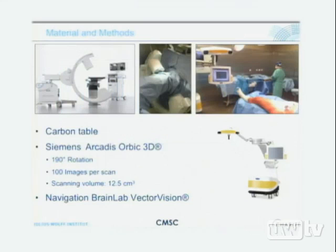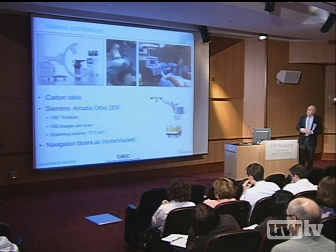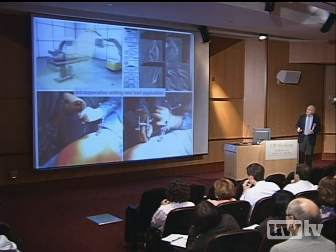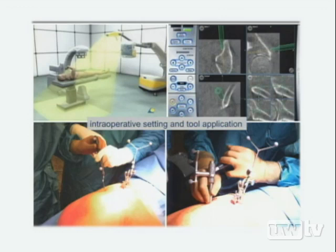For equipment, we use a carbon table, the Siemens Arcadis Orbit 3D scanner with 190-degree rotation, 100 images per scan, and a scanning volume of 12.5 cubic centimeters — very important. We also use the BrainLab VectorVision navigation system with an infrared system and a navigated pointer. Intraoperative 3D scanning requires a reference clamp.